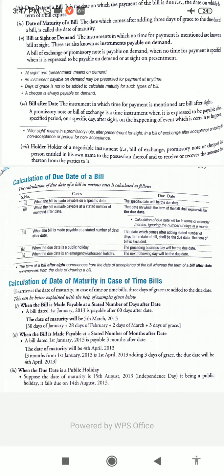Renewal of the bill: when the drawee feels that he will be unable to retire or honor the bill on the due date, he requests the drawer to replace the bill with a new bill. The old bill is cancelled and a new bill is written in lieu of the old bill; such replacement is called renewal of the bill. Retirement of a bill: when the drawer or acceptor of a bill makes payment before the due date, it is known as retiring of a bill. Holder of the bill or holder in due course: the holder of a bill, promissory note, or cheque is a person who is entitled to such negotiable instrument in his own name till its maturity date and to receive the amount due thereon from the parties to it.